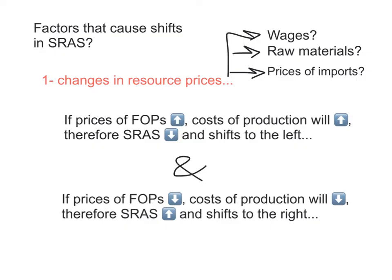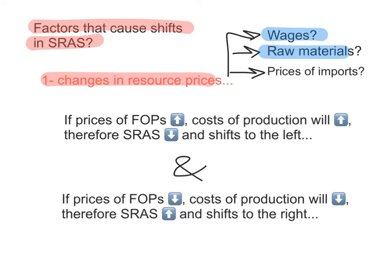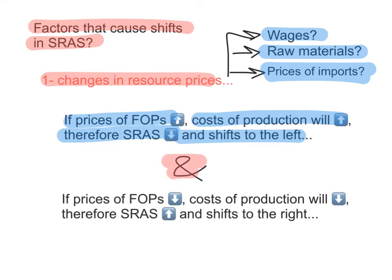The first factor that causes shifts in short run aggregate supply is changes in resource prices. This could refer to wages paid for labor, the prices of raw materials — for example, if oil is a key raw material and oil prices rise globally — or the prices of imports for countries that rely on imported raw materials. If the prices of the factors of production rise, costs of production will also rise, and businesses will pass on these rising costs in the form of higher prices. Therefore, short run aggregate supply decreases and the curve shifts to the left. The opposite is also true: if resource prices fall, costs of production fall, and short run aggregate supply increases, shifting the curve to the right.